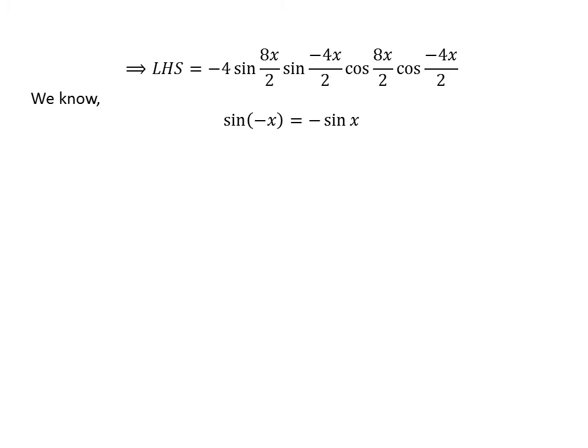We know the famous trigonometry identity sine of minus x is equal to minus sine of x. We also know the famous trigonometry identity cosine of minus x is equal to cosine of x.